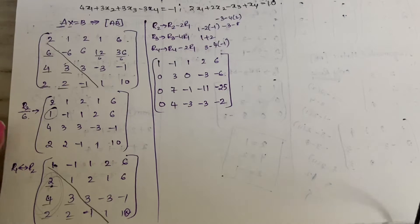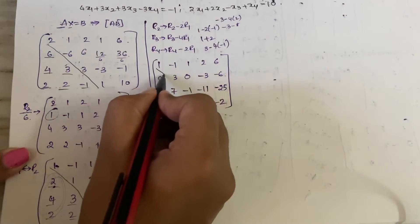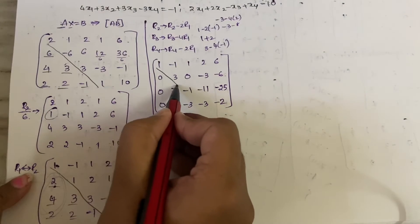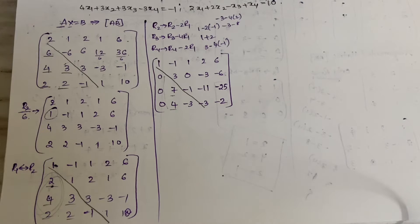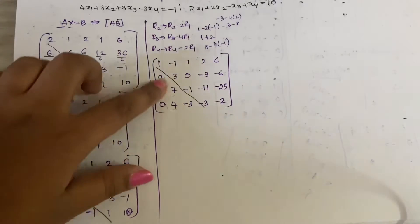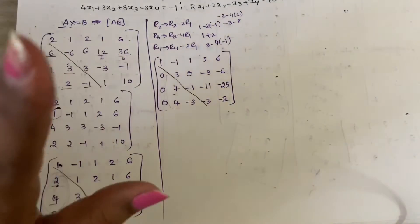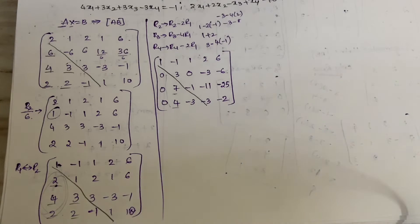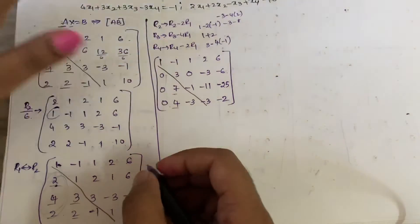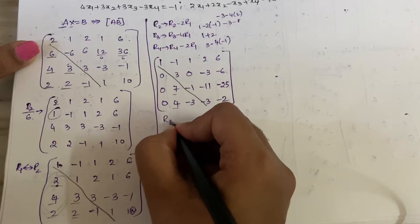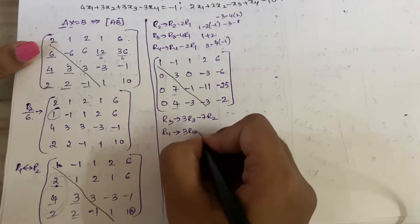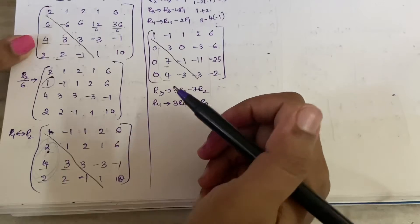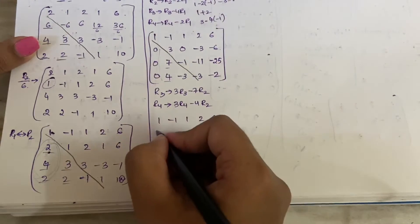Now identify the diagonal again. We have 1, 3, -1... the zeros are in place for the first column. Now we need to make the 7 and 4 (in R3 and R4 second column) equal to zero. We can't use R1 as it would disturb the zeros. We must work with R2. Since 7 and 3 share no common factor, we do: R3 → 3R3 - 7R2, and R4 → 3R4 - 4R2.